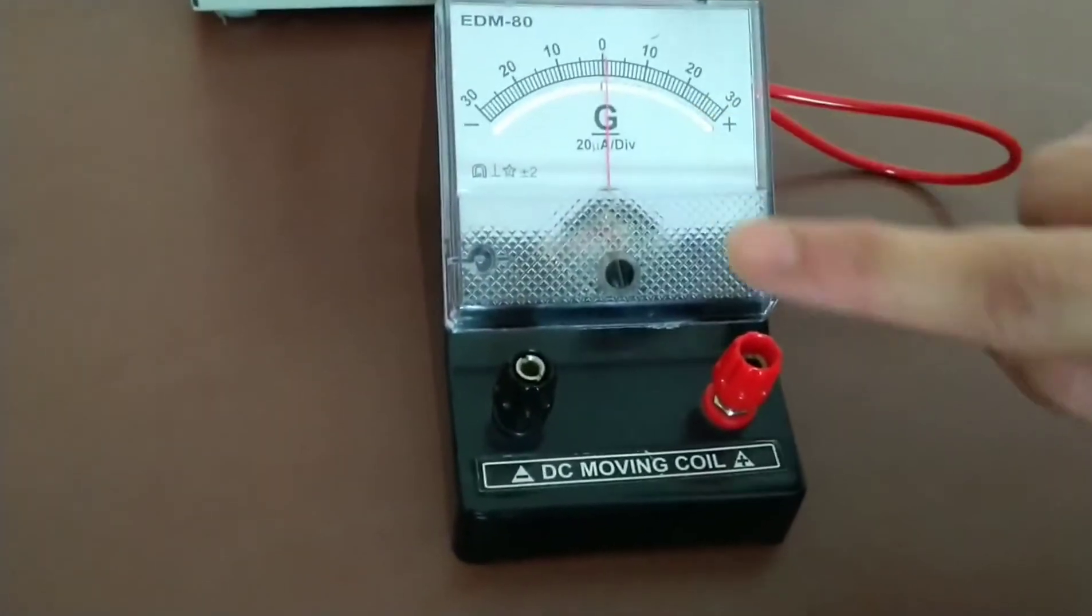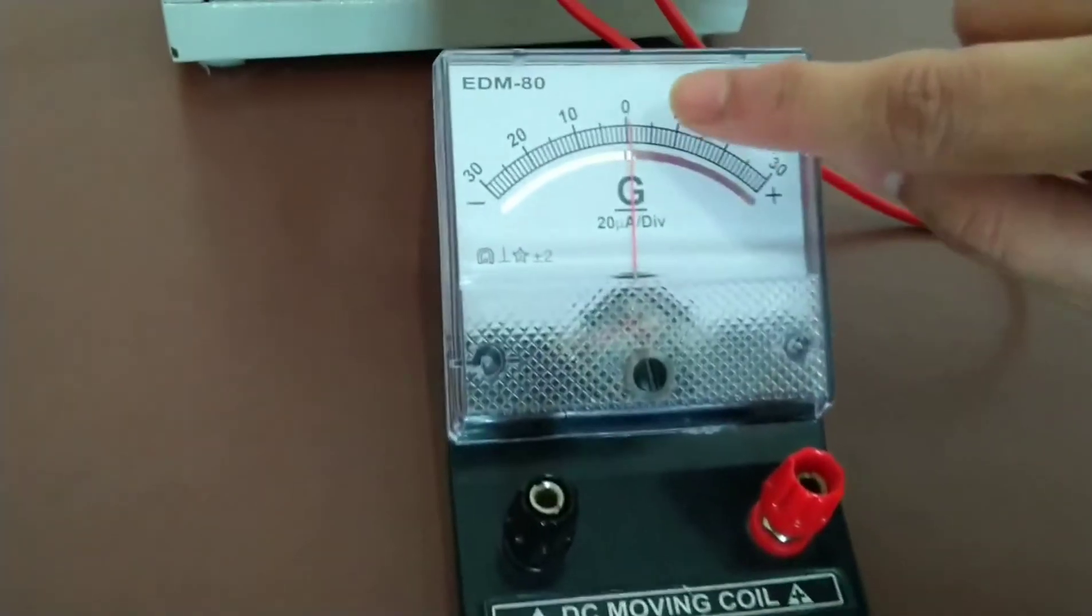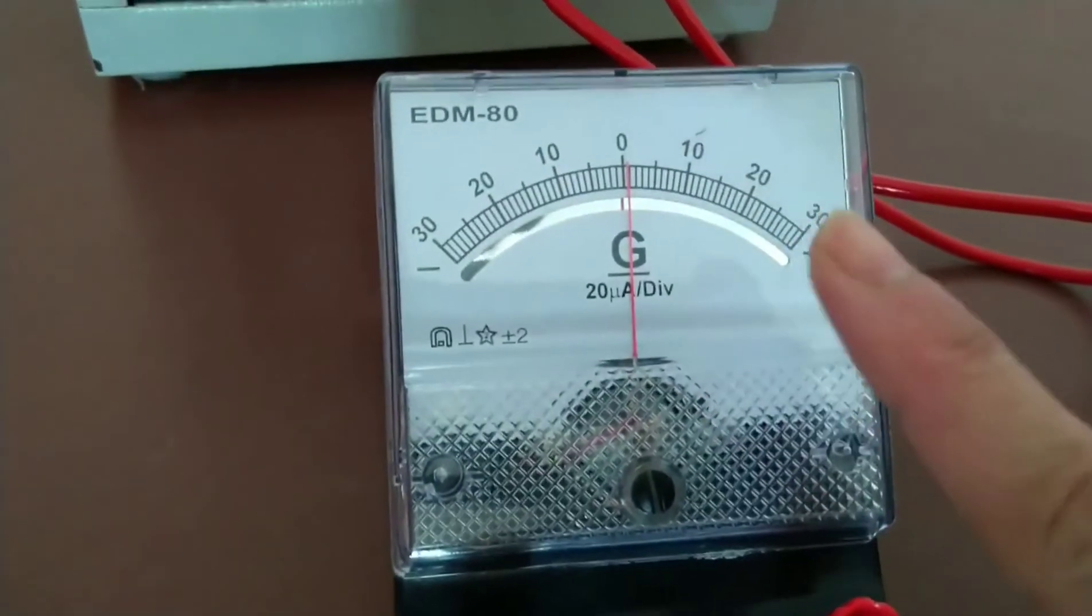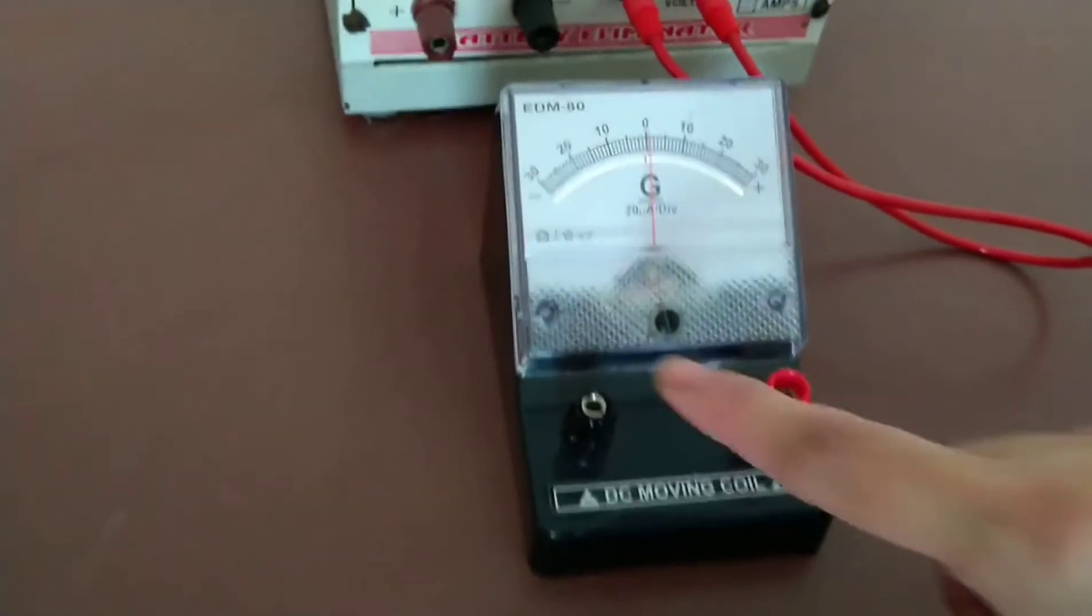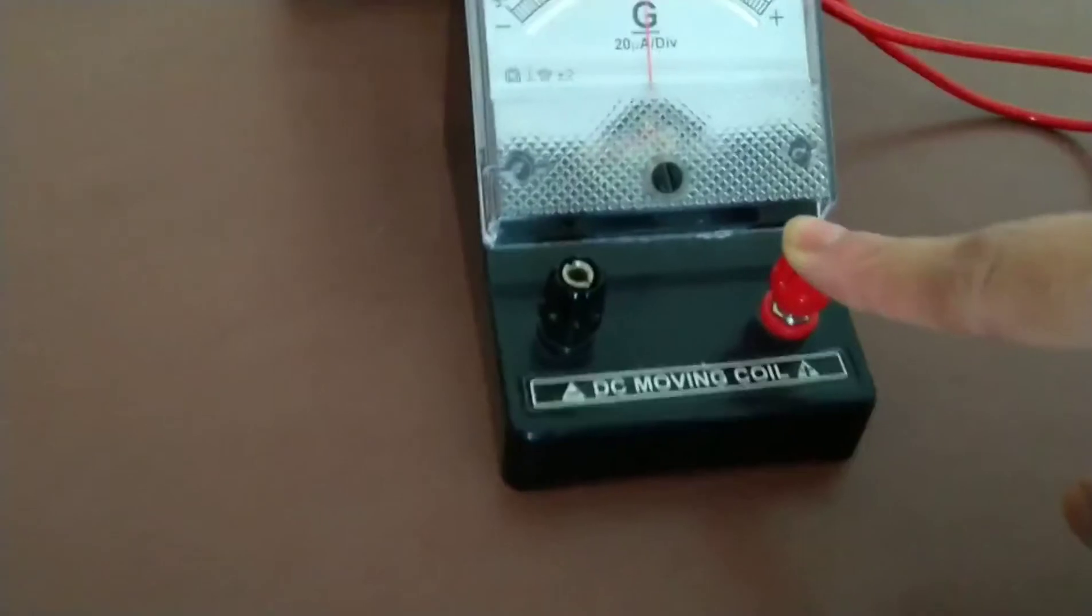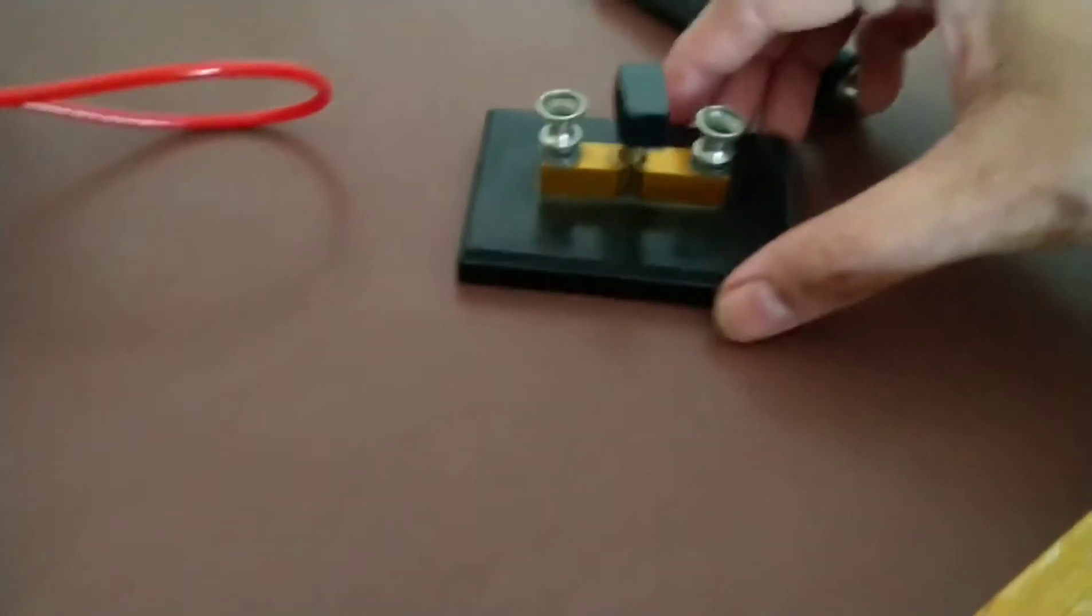And this is the most important device in this experiment that is called galvanometer. The difference between voltmeter and galvanometer is this zero point that is in the middle and this scale is marked in both directions. These are the two terminals which are used to connect this galvanometer in the circuit.